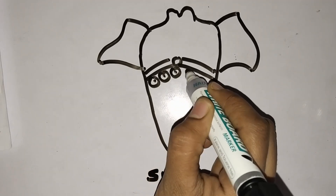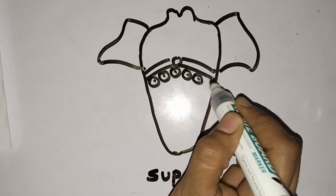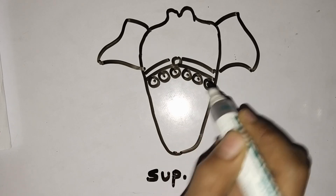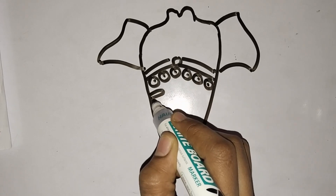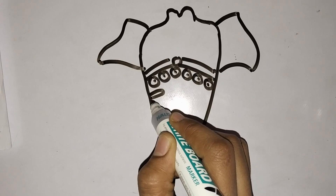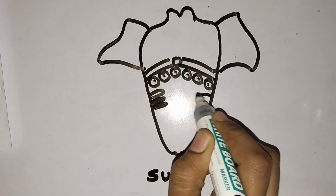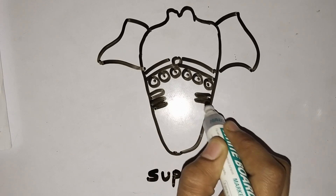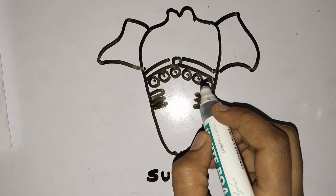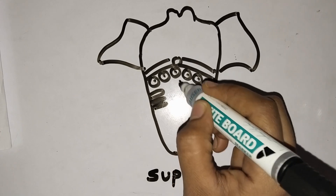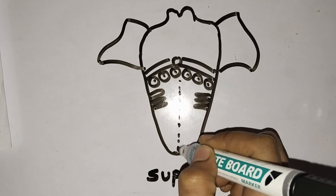This is the circumvallate papillae. These are the foliate papillae. In the tongue there are four types of papillae: these are the circumvallate and foliate.